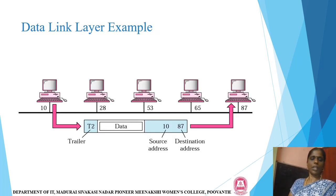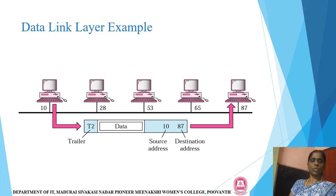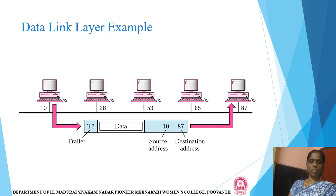This is the diagrammatic representation of the data link layer. A number of devices are connected through the media or link. Address 10 is the source address and 87 is the destination address. Data is passed between the source and destination in the data link layer.